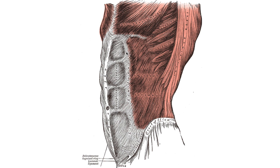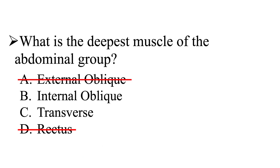Since we know the rectus abdominis and the external obliques are the most superficial, we can go ahead and get rid of those two answers. That leaves us with either the internal obliques or the transverse abdominal muscle, giving us a 50/50 chance of getting this answer correct.